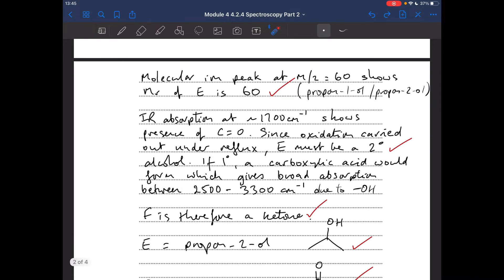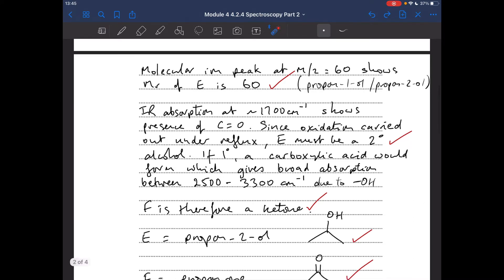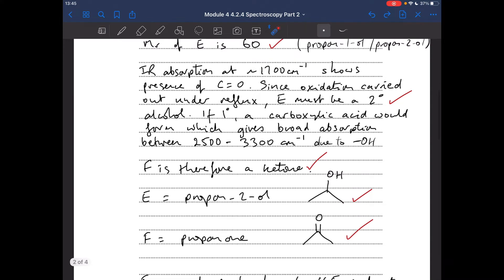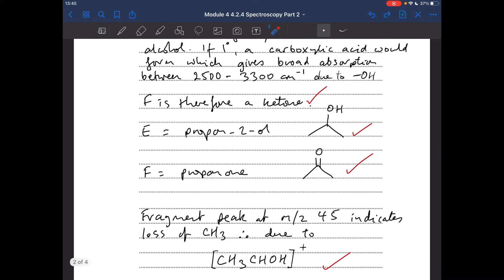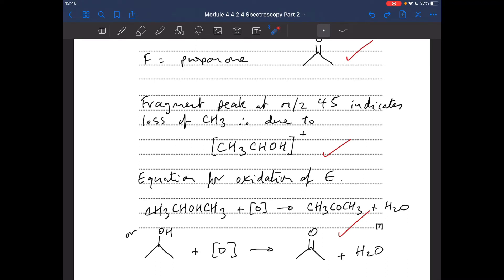So moving on to substance F now. So F is the product of oxidation. That is a ketone. So E has to be propan-2-ol. F has to be propanone. And then I'm just going back to the mass spectrum. Now I know what I'm talking about. It's easy to identify the fragment peak. The fragment peak at M/Z 45 indicates the loss of a CH3 group. Therefore, the fragment's due to this ion here. And don't forget, you need a positive charge for anything that's picked up by a mass spectrometer. And then finally, we have to give the equation for the oxidation of E. So you could either do it in structural formula like that or skeletal formula like that. Even displayed if you could be bothered to draw out all the bonds. But I would probably go for something like skeletal.